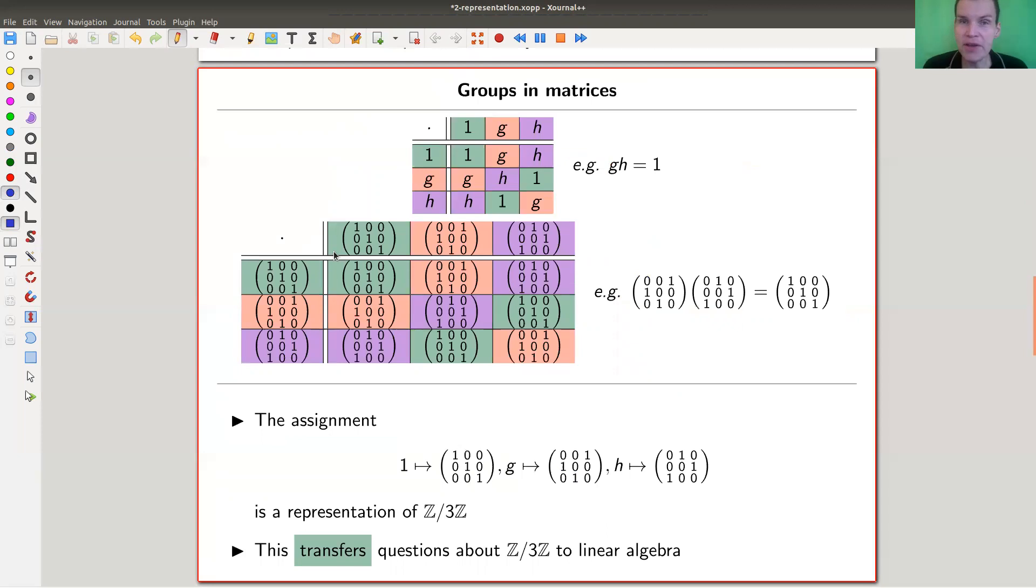In the following sense actually. The point of representation, you want to represent a group as matrices. And the point is the following, everything is reflected now in linear algebra. So here the multiplication table, and the multiplication table of the associated matrices. You don't need to look too closely at those tables, maybe the colors help to see that they're actually exactly the same.